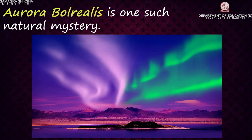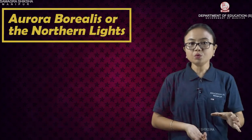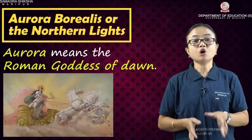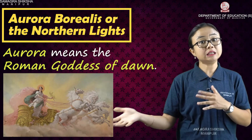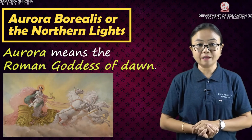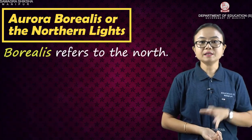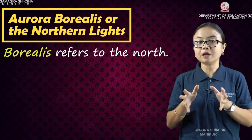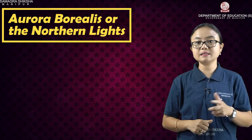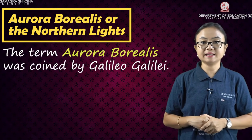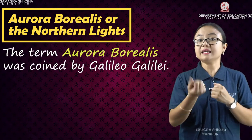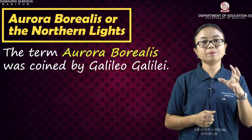Aurora Borealis has another name: Northern Lights. Aurora is the name of a Roman goddess — she is the goddess of dawn, early morning dawn. Borealis means North. So the name Aurora Borealis, or Northern Lights, was given by the Italian scientist Galileo Galilei.